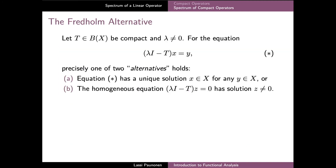The description of the spectrum of a compact operator leads directly to a result known as the Fredholm alternative, named after the Swedish mathematician. This result states that for the linear equation (lambda I minus T)x equal to y, with a nonzero complex number lambda, precisely one of the two alternatives holds.